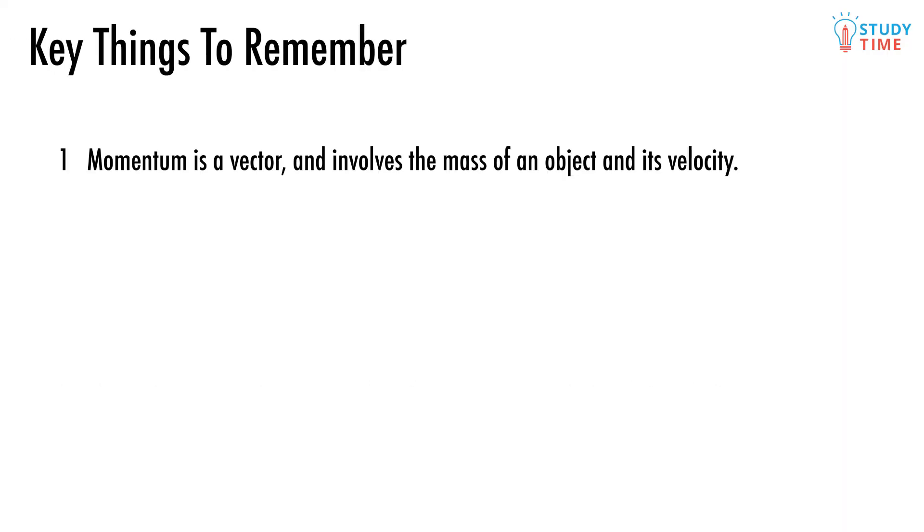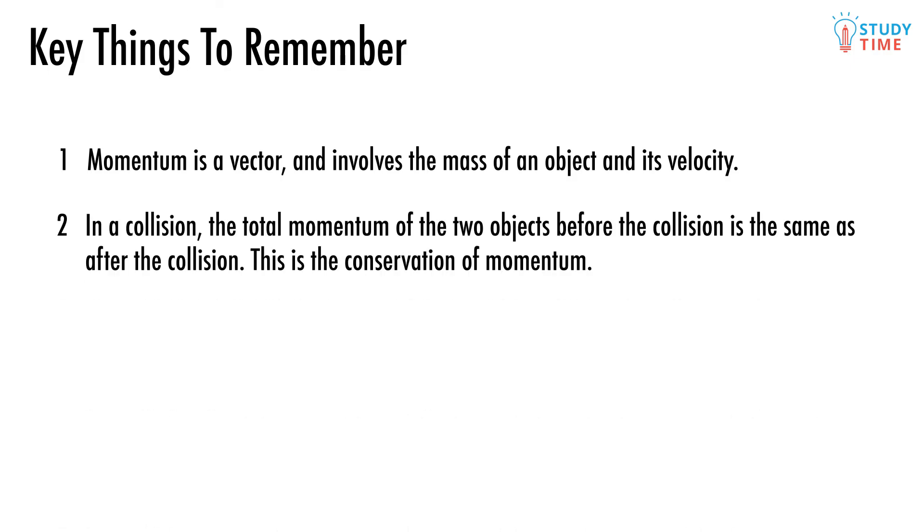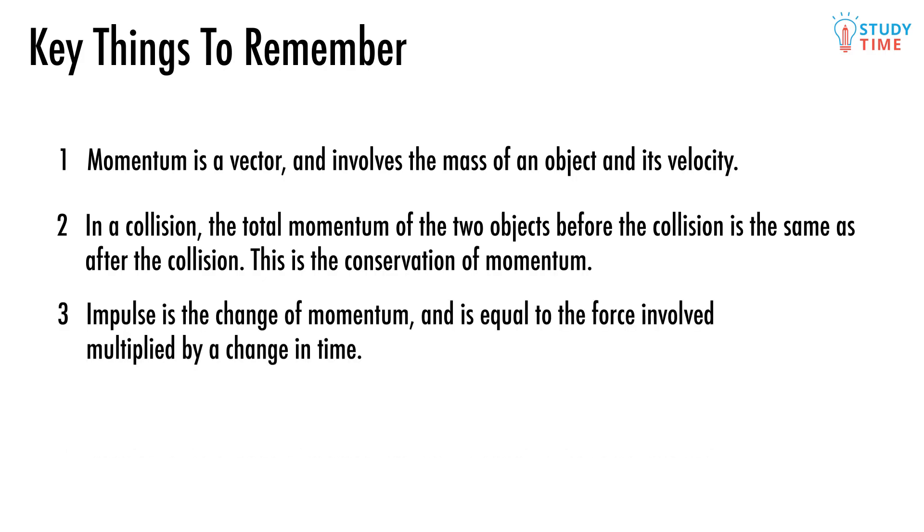Remember, momentum is a vector and involves the mass of an object and its velocity. In a collision, the total momentum of the two objects before the collision is the same as after the collision. This is the conservation of momentum. Impulse is the change of momentum and is equal to the force involved multiplied by a change in time.